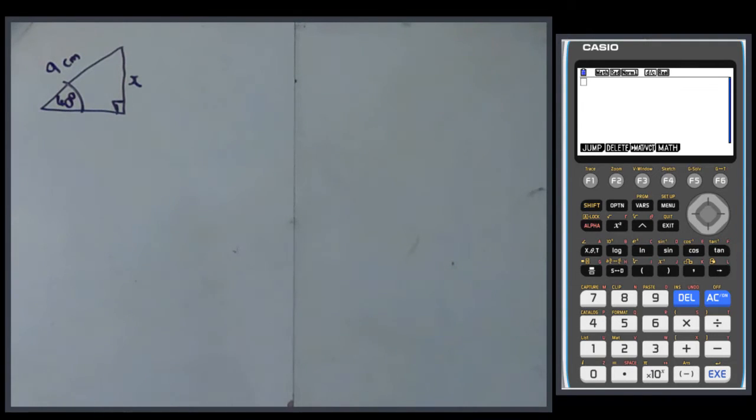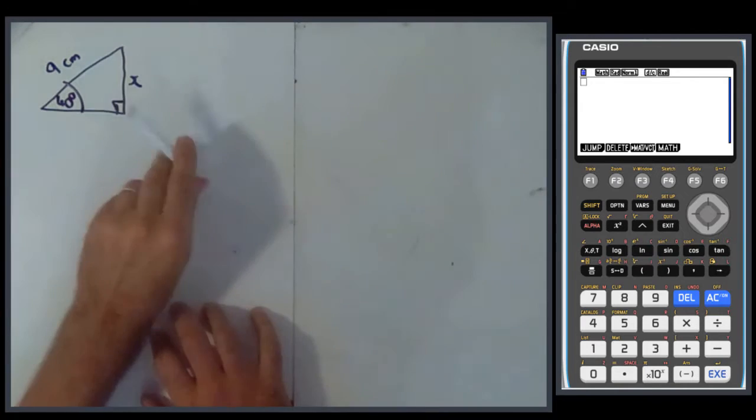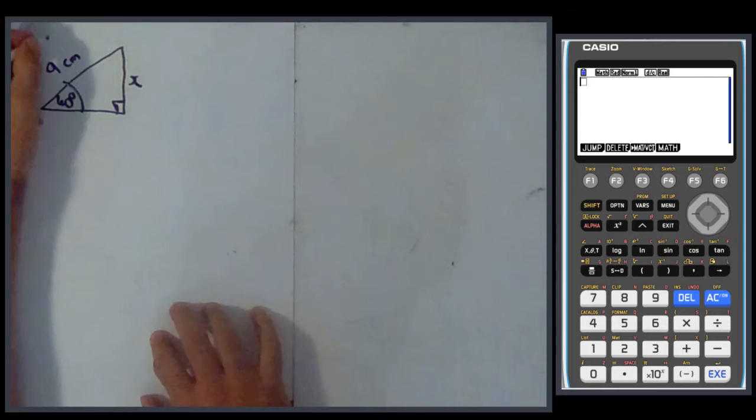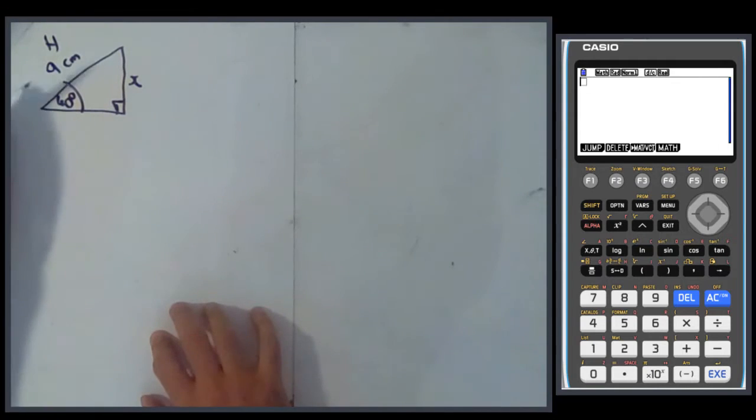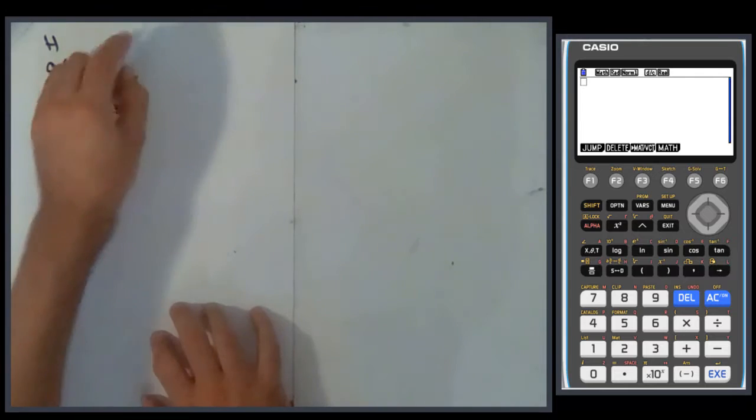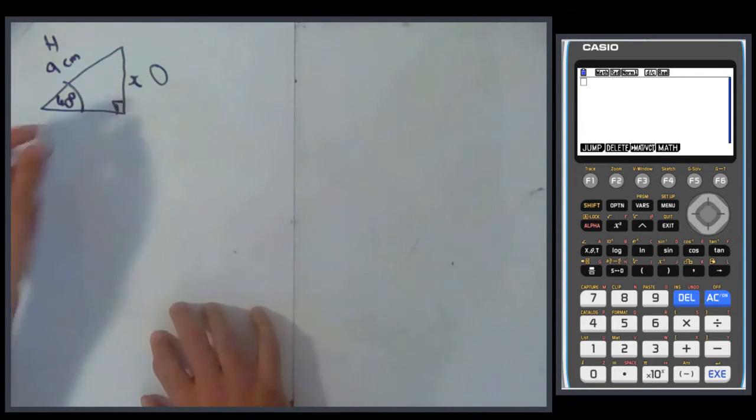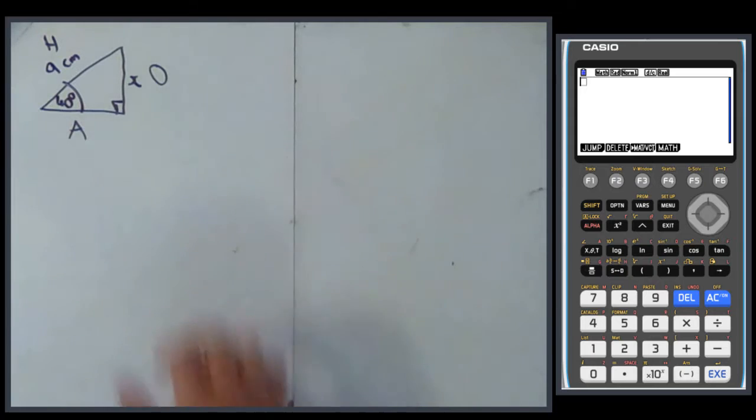So firstly, label the sides. HOA ring-ring, so H, hypotenuse, longest side, opposite the right angle, it's here. O, opposite the angle in the question, that's the 40, the angle we're going to use. O is here, and A is the other one.